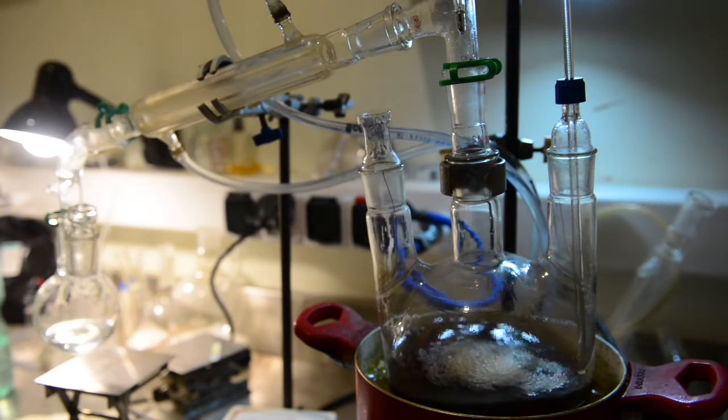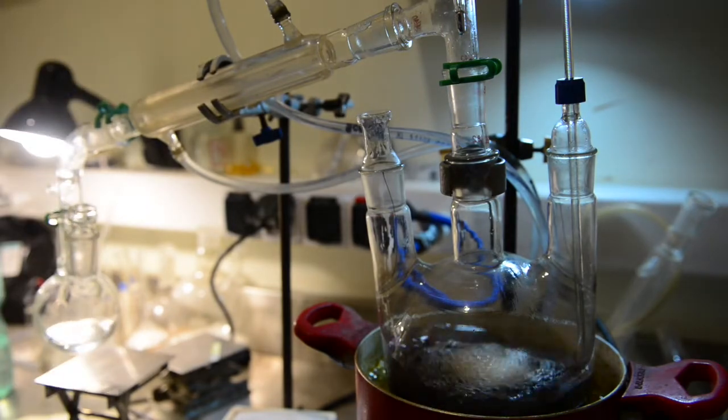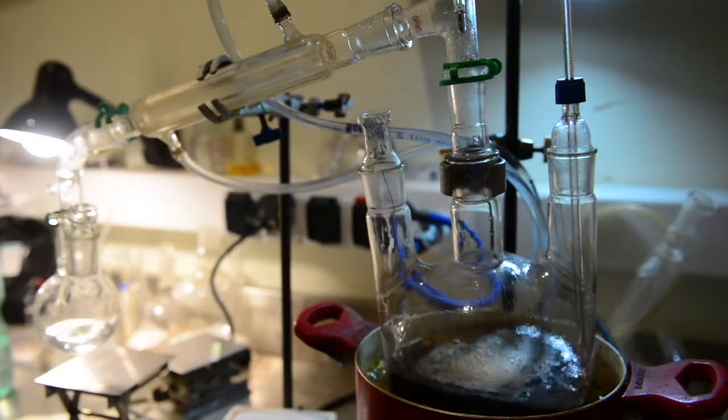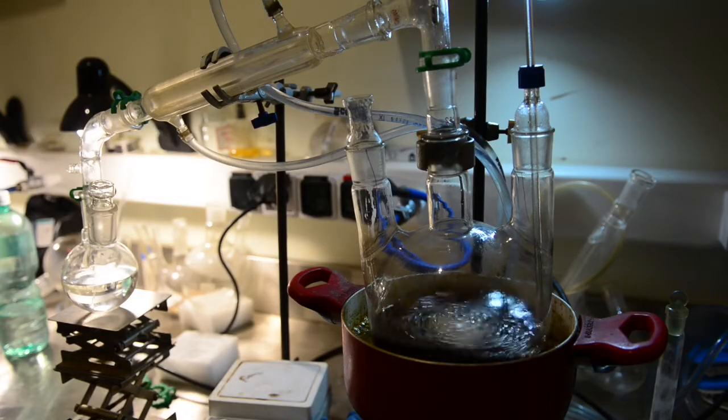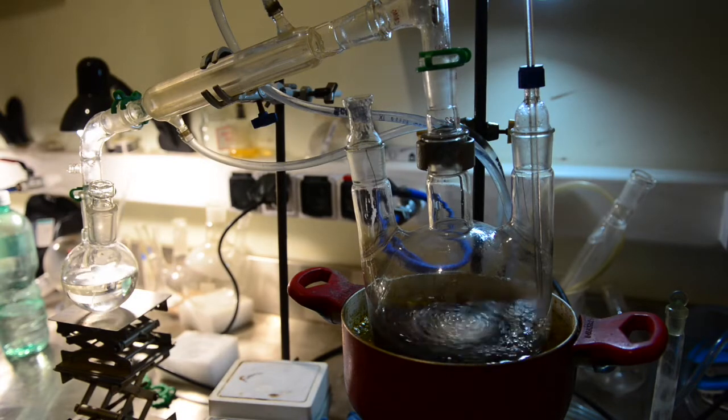Allyl alcohol forms a water azeotrope with a boiling temperature of 88 degrees Celsius. I have decided to collect the fraction coming over from 85 to 99 degrees and then dry collected liquid with calcium chloride. We don't need dry absolute alcohol for our next reaction step, but I was interested in how calcium chloride works and decided to perform further drying steps.